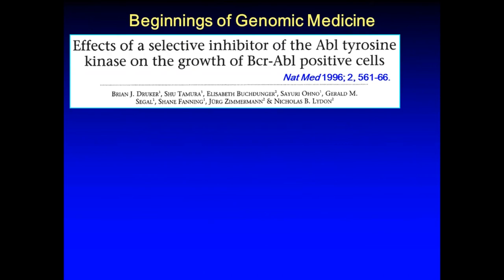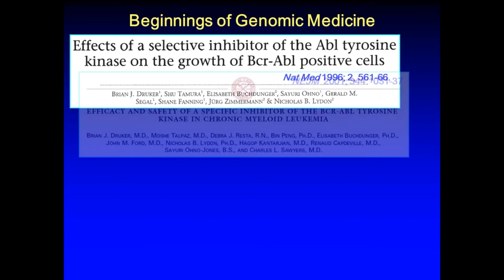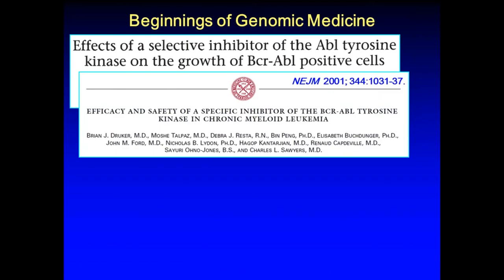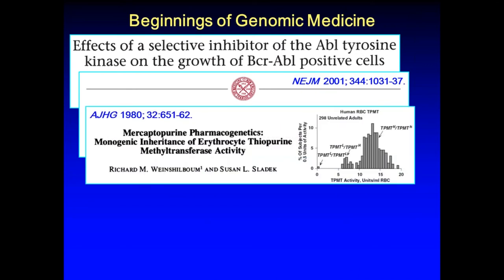Genomic medicine is primarily using an individual's genomic information in their clinical care. One of the first examples was in the cancer field, using a selective inhibitor of the ABL tyrosine kinase on the growth of BCR-ABL cells in chronic myelogenous leukemia. Within five years, clinical trials showed the efficacy of this in an otherwise quite serious and progressive condition. We also see pharmacogenomics as an area where genomic medicine can be applied.